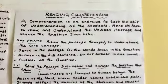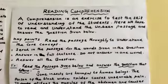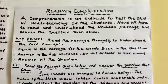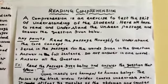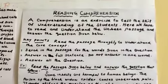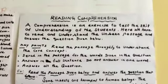Then we move to comprehension — reading comprehension. It is also a very easy one because the passage, questions, and answers are all in the question paper itself. You have to read the passage correctly, understand it, get the meaning of the passage, see the given questions below, read the question thoroughly, understand it, and find out the answer from the given passage.